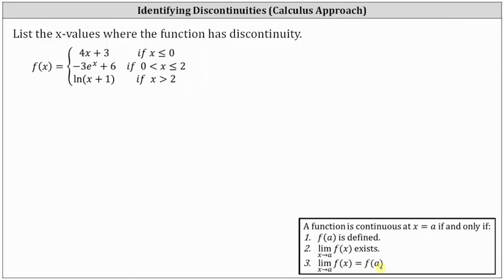Looking at the piecewise defined function, we first need to recognize that f(x) = 4x + 3 is continuous if x is less than or equal to zero; f(x) = -3e^x + 6 is continuous if x is greater than zero and less than or equal to two; and f(x) = ln(x + 1) is continuous if x is greater than two. Therefore, if we do have discontinuity, it would have to occur at x equals zero or x equals two.